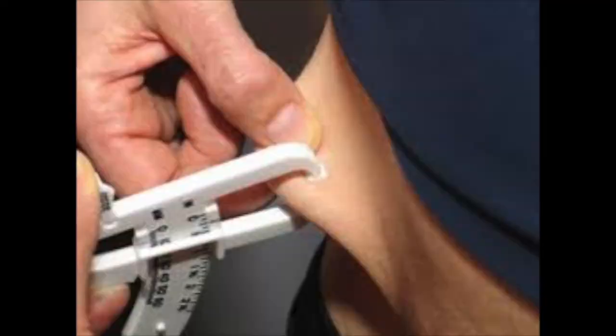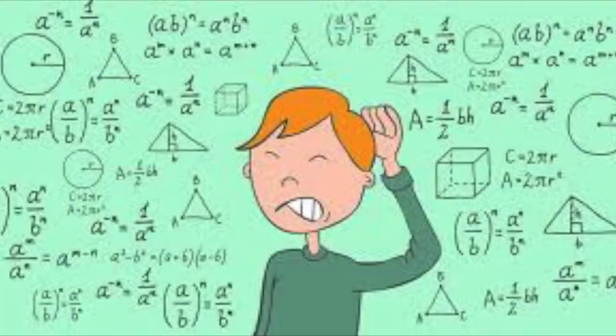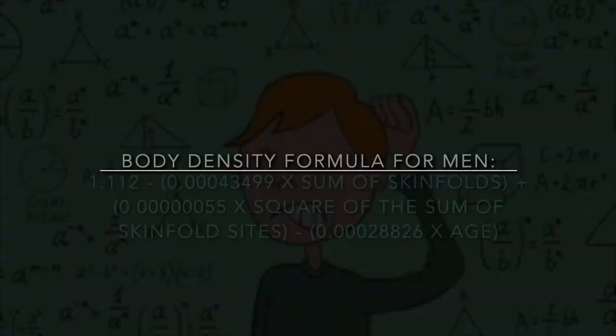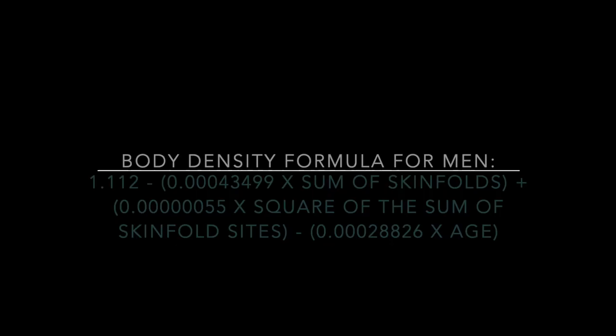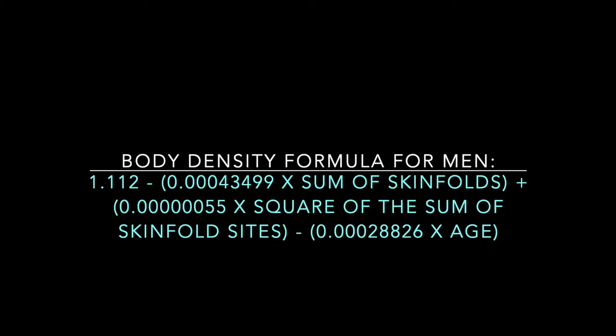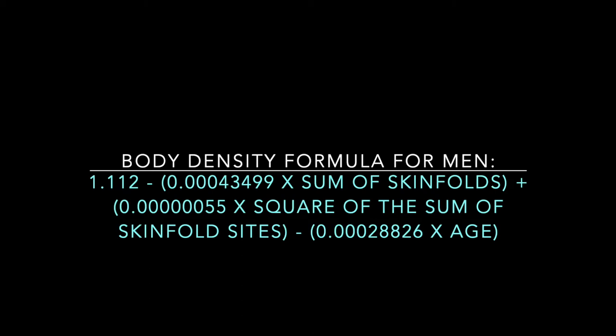Once all sites have been measured and recorded, some math has to be done in order to determine body composition. First, body density has to be calculated. If male, use the following formula. If female, use this formula. Once body density has been calculated, one can use either the Brozek equation or the Siri equation to calculate body fat percentage.